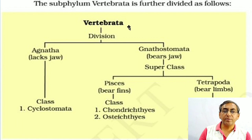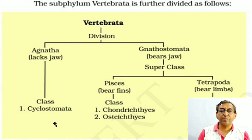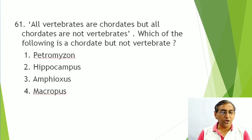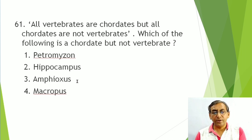Classification of Vertebrata per NCERT: divided into Agnatha (jaws absent — 'a' = absent, 'gnatha' = jaw) and Gnathostomata (jaws present). Agnatha includes class Cyclostomata (e.g., Petromyzon). Gnathostomata is divided into Superclass Pisces (Chondrichthyes — cartilaginous fishes; Osteichthyes — bony fishes) and Superclass Tetrapoda (Amphibia, Reptilia, Birds, Mammals). Question: chordate but not vertebrate — Amphioxus (Cephalochordata) is the answer.